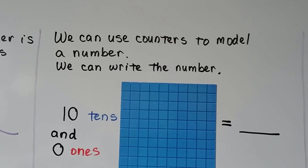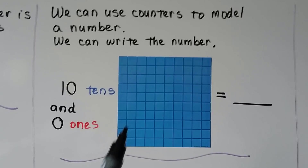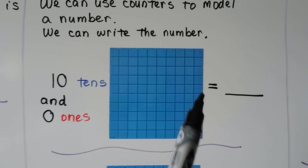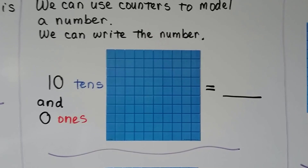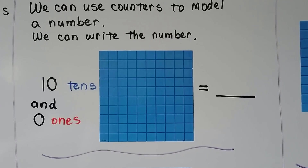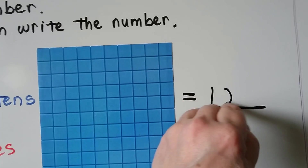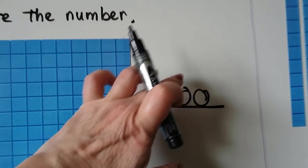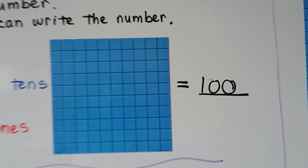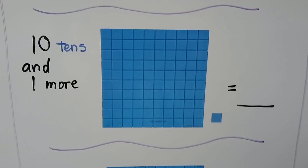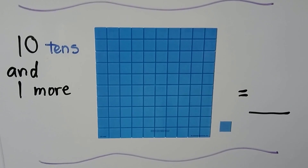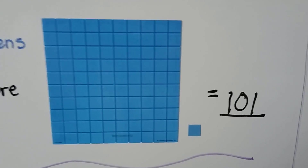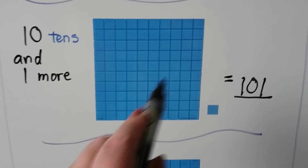We can use counters to model a number. We can write the number. Here we have ten tens — one, two, three, four, five, six, seven, eight, nine, ten tens — all pushed together. We have zero ones. Ten tens is equal to ten tens and zero ones: one hundred. Now we have ten tens and one more. We can say we have ten tens and one one, right here. We have one hundred one.